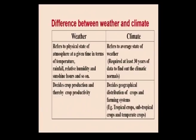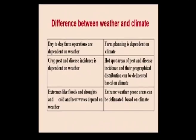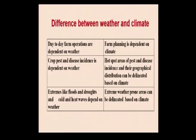Day-to-day farm operations are dependent on weather, while farm planning is dependent on climate. Crop pest and disease incidence is dependent on weather, whereas hotspot areas of pest and disease incidence and their geographical distributions can be delineated based on climate. Extreme weather conditions like floods, droughts, cold waves, and heat waves depend on weather, while extreme weather-prone areas can be delineated based on climatic conditions.